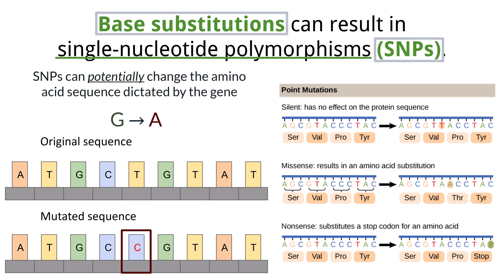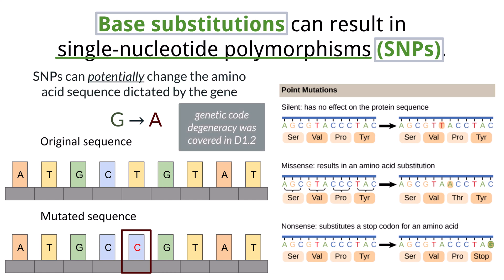That's because of something called genetic code degeneracy. Recall from the topic of protein synthesis that multiple codons, or sets of three nucleotides, can code for the same amino acid during protein synthesis. A base substitution is also known as a point mutation.